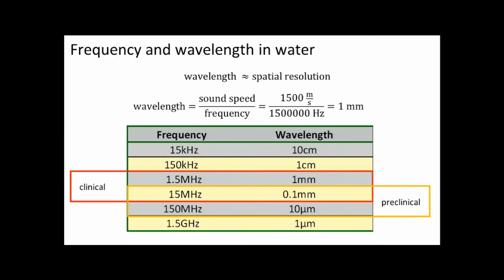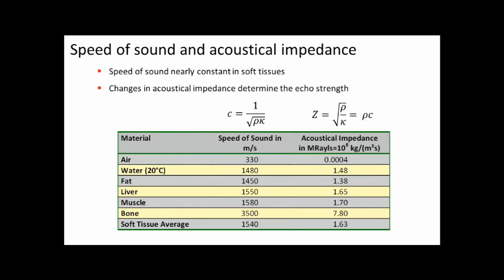Preclinical small animal scanners typically start at about 15 megahertz and go up to about 50 to 70 megahertz, so the resolution can be much higher and you can image mice and rats in very good resolution. We assume in ultrasound imaging that the speed of sound in tissues is constant — one of the assumptions that is not really true. Looking at fat, liver, muscle, and soft tissue, the average is about 1540 meters per second, all very similar — about 10% difference between them. Air and bone are completely different.